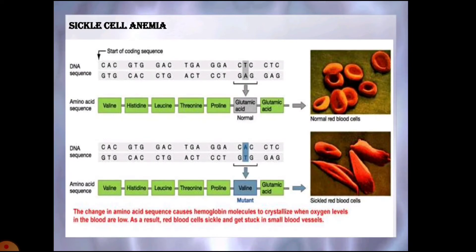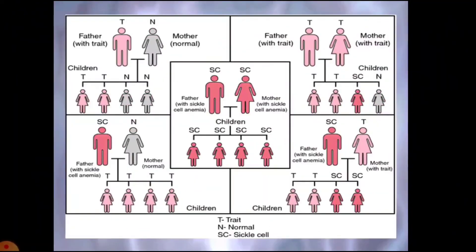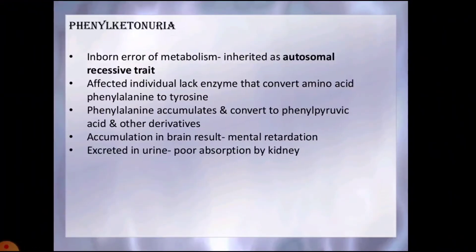The third disorder is phenylketonuria, an inborn error of metabolism inherited as an autosomal recessive trait. The affected individual lacks the enzyme which converts the amino acid phenylalanine to tyrosine. Phenylalanine accumulates and gets converted into phenylpyruvic acid and other derivatives. The accumulation of these in the brain results in mental retardation, and some is excreted in the urine. Phenylpyruvic acid accumulates in the blood and damages the brain.